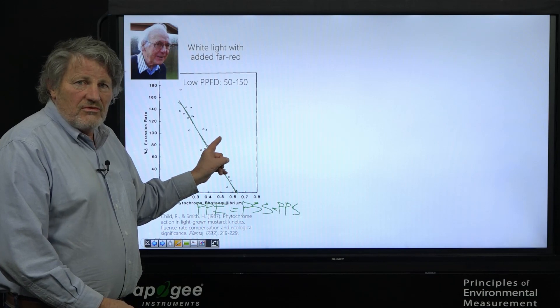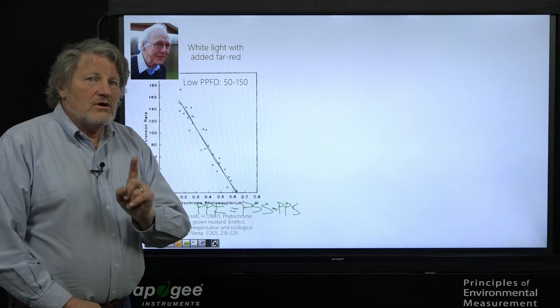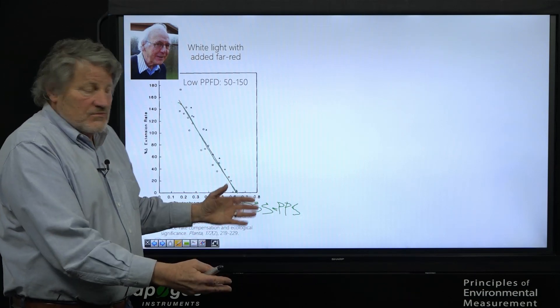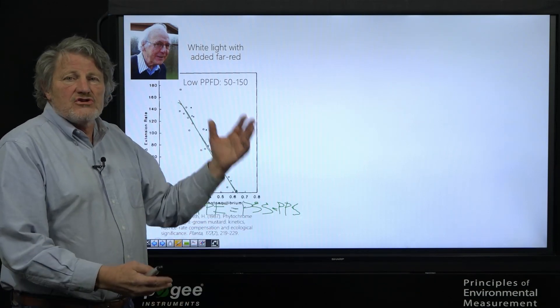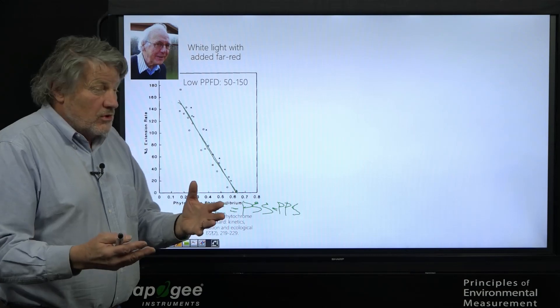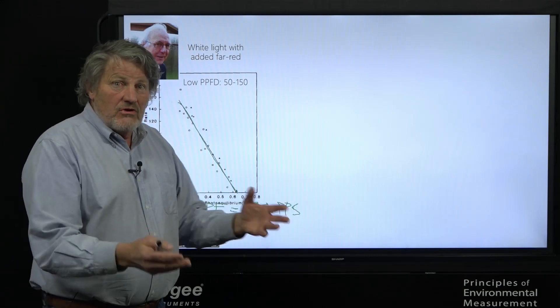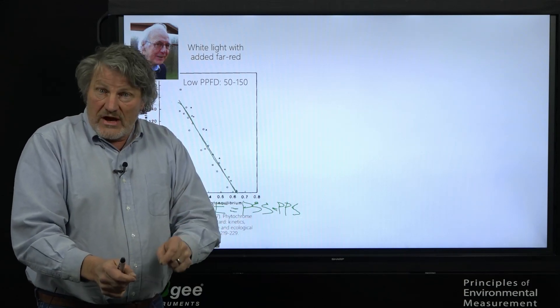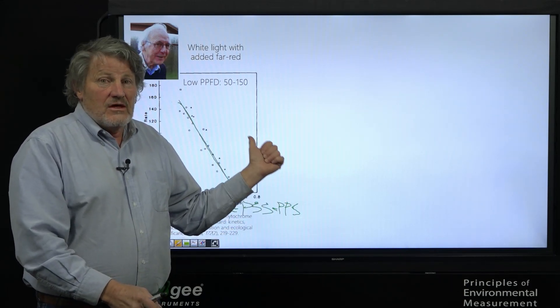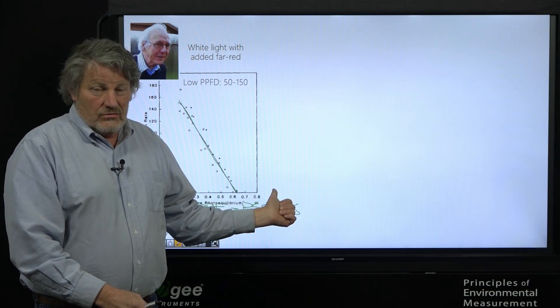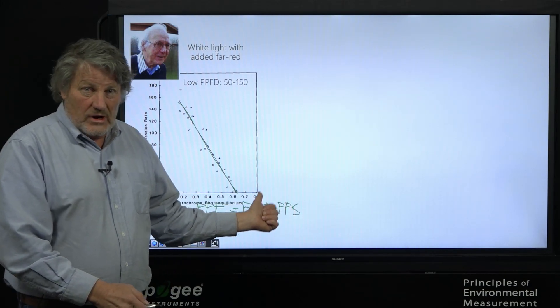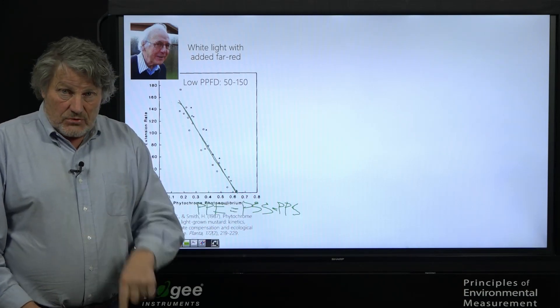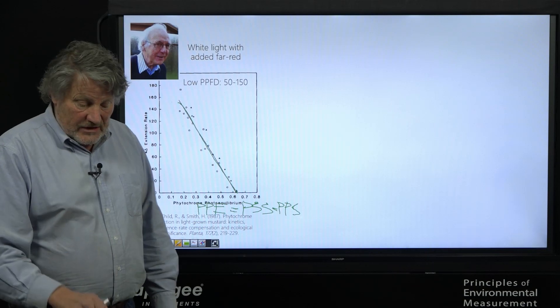And it works beautifully as long as the background of light is broad spectrum white light. This works beautifully in sun and shade outside. But when we move to LEDs with varying ratios of red and green and blue radiation, I will show you the data. This breaks down. And we have some good ideas of why it breaks down. But this is not as good a predictor of plant shape.